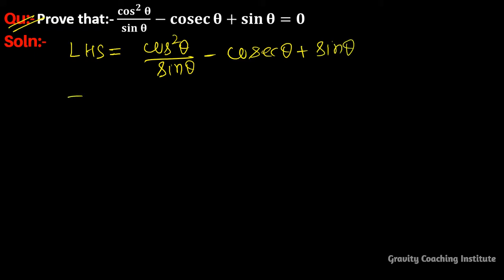This is equal to... and we know that the identity of cos²θ is equal to 1 - sin²θ, so we get (1 - sin²θ)/sinθ - cosecθ + sinθ.